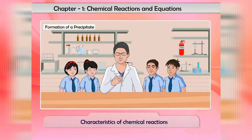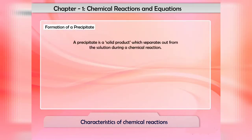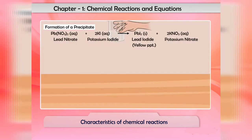Now we will discuss the second characteristic: formation of a precipitate. When two reactants are mixed, if one of the products formed is insoluble in water, it is called a precipitate. Thus, a precipitate is a solid product which separates out from the solution during a chemical reaction.